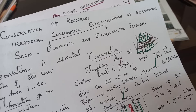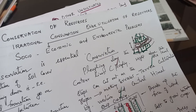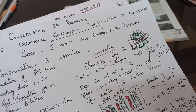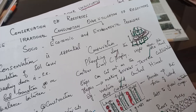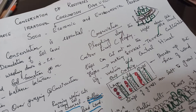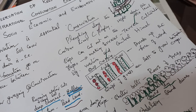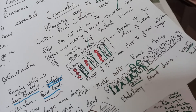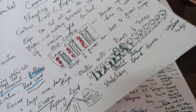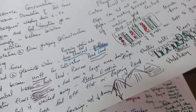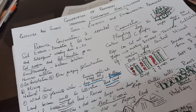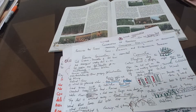Yesterday's video covered contour lines, contour plowing, strip cropping, and shelter belts as methods of soil conservation. If yesterday's picture was not clear, I am giving it once more for clarity. I am doing all this for you children only, using just the mobile camera, without any editing.